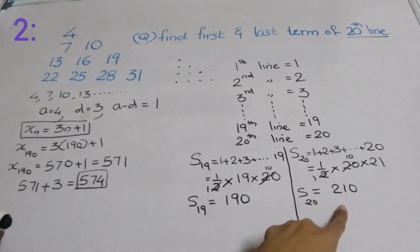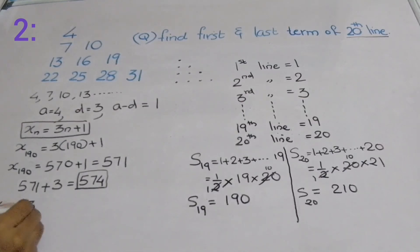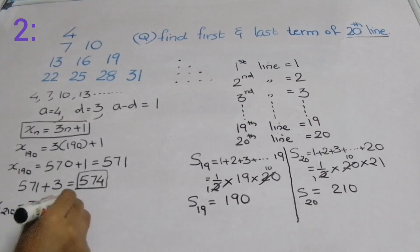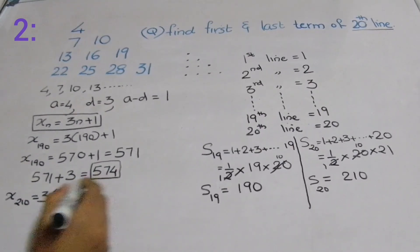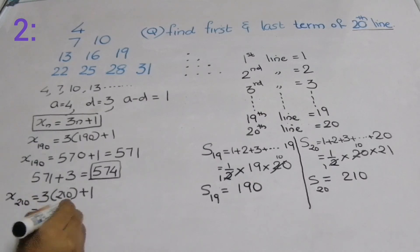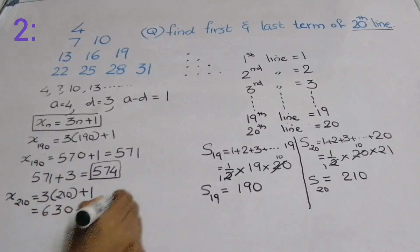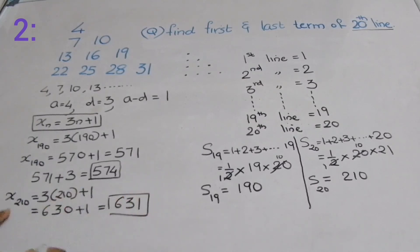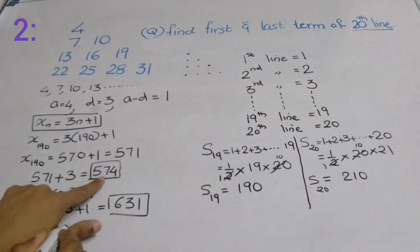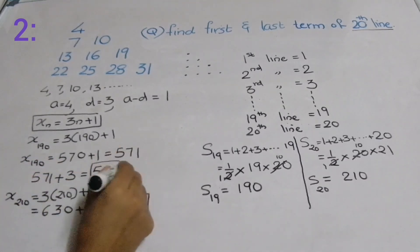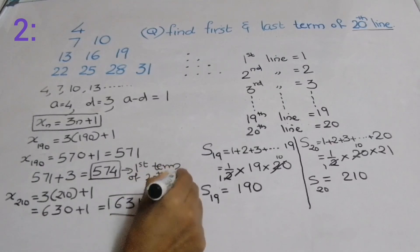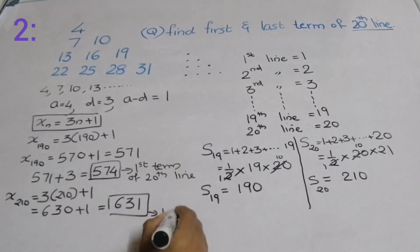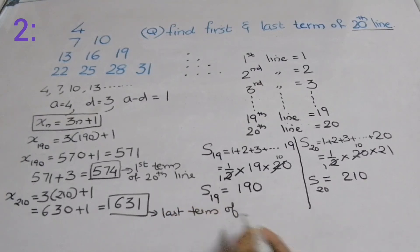Now finding the last term of the 20th line: x(210) = 3 × 210 + 1 = 630 + 1 = 631. So 631 is the last term of the 20th line. Therefore, the first term of the 20th line is 574 and the last term of the 20th line is 631.